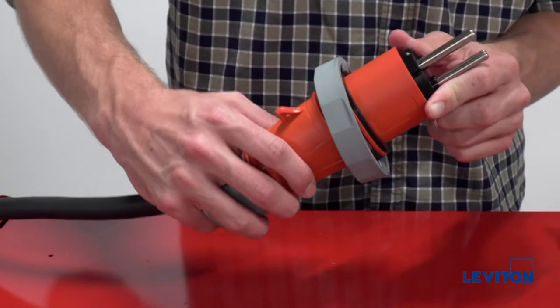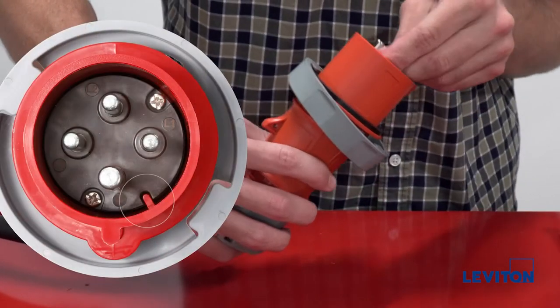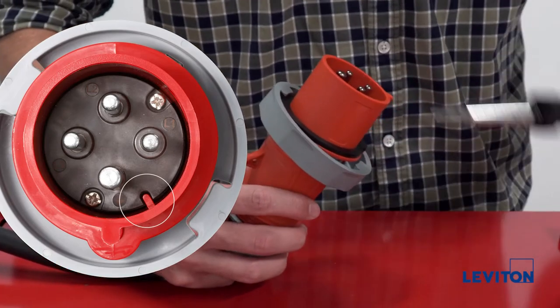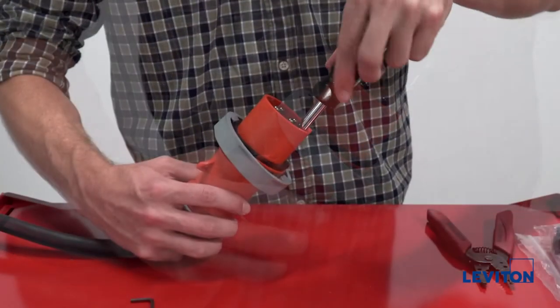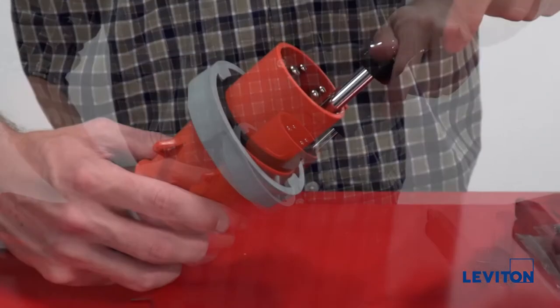Once the device has been wired, reconnect the contact carrier to the housing. Be sure to line up the key on the contact carrier with the notch inside the housing. Next, tighten the assembly screws with the screwdriver to 8 inch pounds.